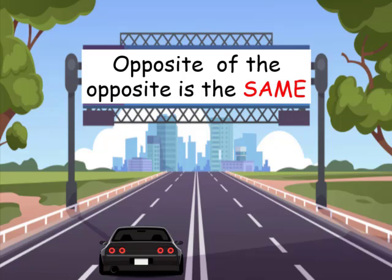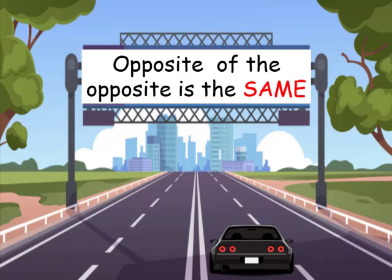But in the US, we drive on the opposite side that Japan drives, which is the right side of the road. Therefore, the opposite of the opposite is the same.